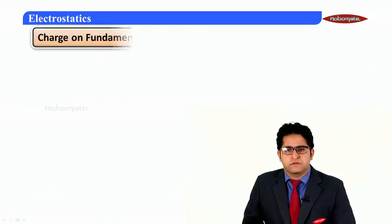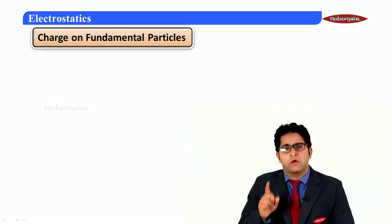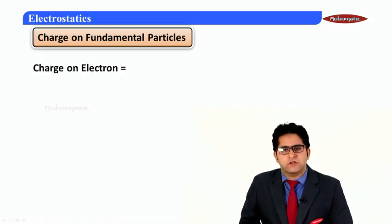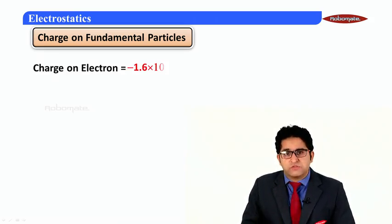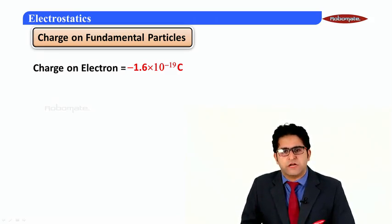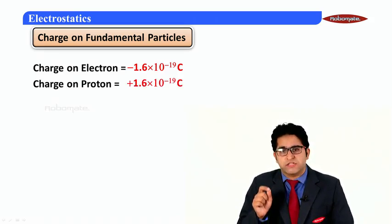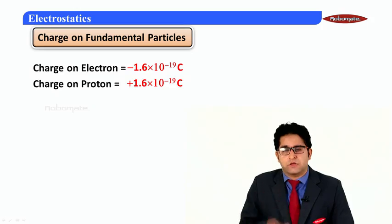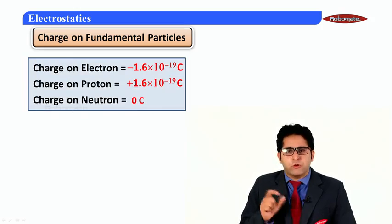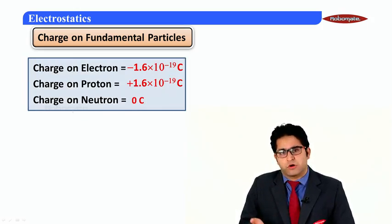Let us revise the values of charge on the fundamental particles. The three fundamental particles are electron, proton, and neutron. The charge on an electron is −1.6 × 10⁻¹⁹ coulomb, the charge on a proton is +1.6 × 10⁻¹⁹ coulomb, and the charge on a neutron is 0 coulomb.